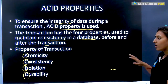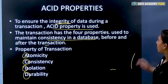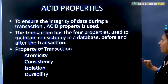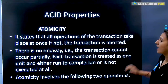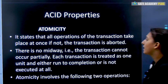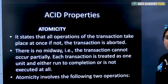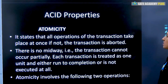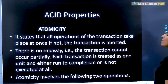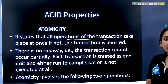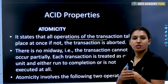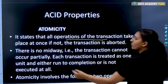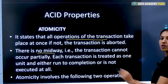First is Atomicity. It states that all operations of the transaction take place at once; if not, the transaction is aborted. There is no midway. This means whatever operation needs to be performed will happen completely at once — it cannot stop halfway. If your amount is deleted from one side but not added on the other, that should not happen. The transaction cannot occur partially.